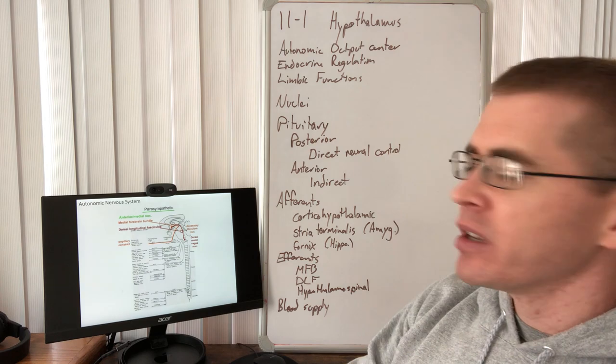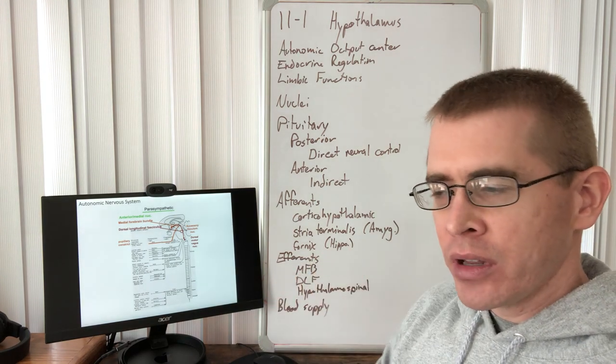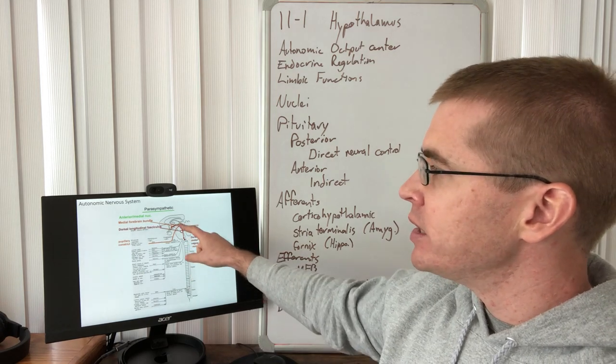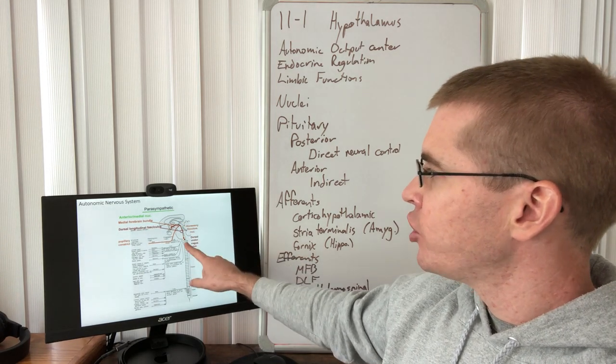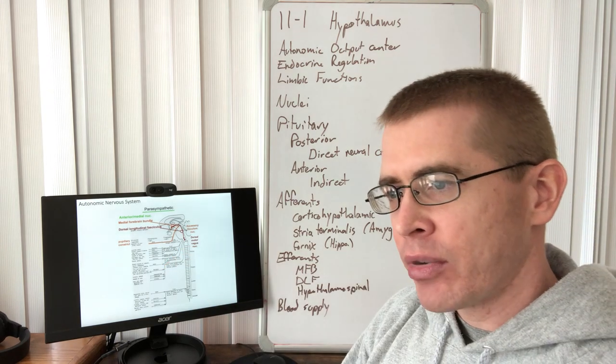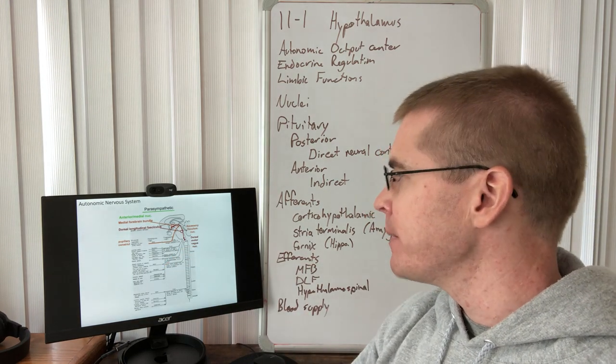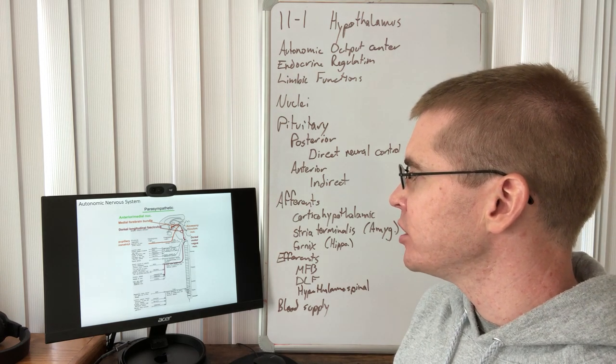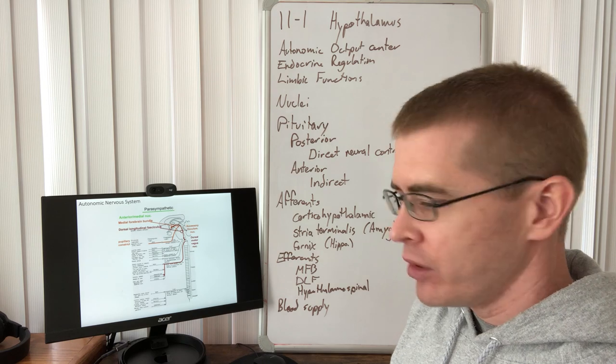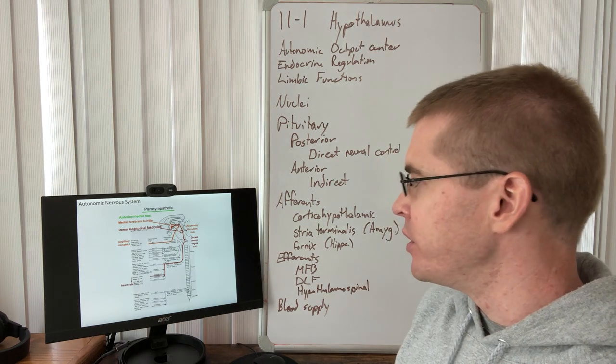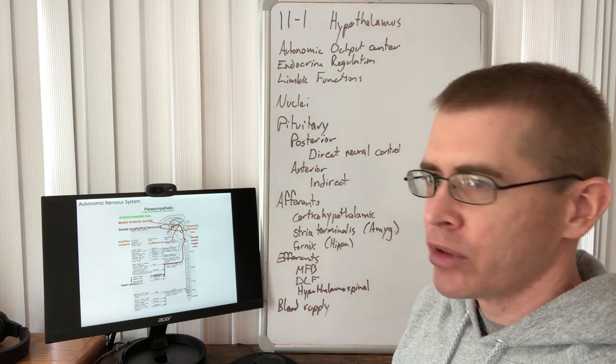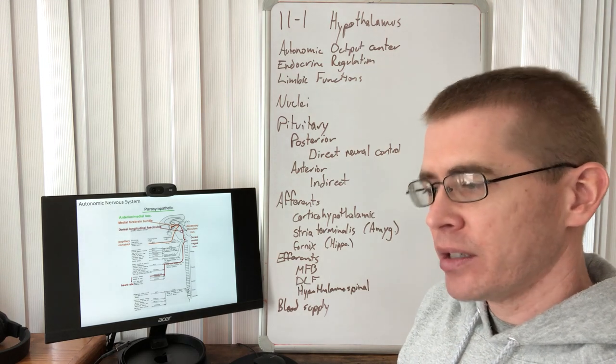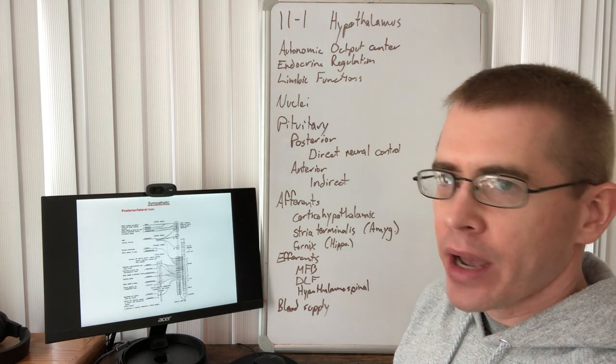So the MFB continues downward. So all of these tracts coming from the hypothalamus are continuing down via the DLF, the dorsal longitudinal fasciculus to the other medullary brainstem parasympathetic brainstem nuclei to have their functions on, for instance, salivation and the peristalsis of the gut down, eventually through the parasympathetic vagus nerve to regulate heart rate, et cetera.